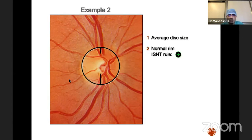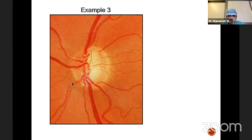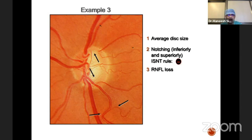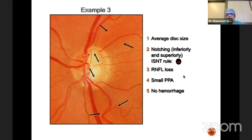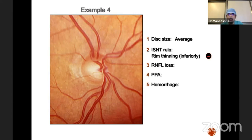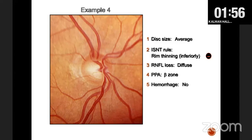Third case: average-sized disc with clear thinning of the neuronal rim superiorly and inferiorly, with notching. RNFL loss is visible superiorly and inferiorly. Parapapillary atrophy is present but small. No hemorrhages, but the notching and RNFL loss indicate glaucoma. Fourth patient: average-sized disc with inferior thinning, sloping and thinning inferiorly, diffuse RNFL loss, and a small area of parapapillary atrophy. No disc hemorrhage, but based on the inferior thinning you must correlate with disc findings to confirm.